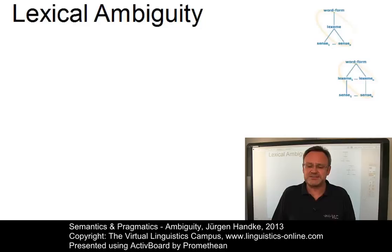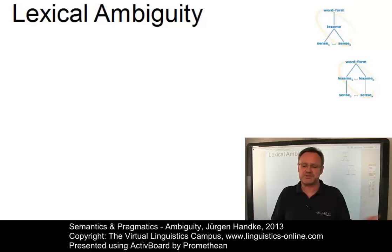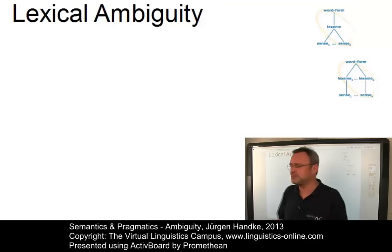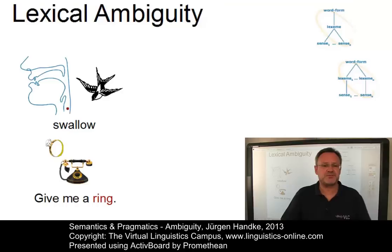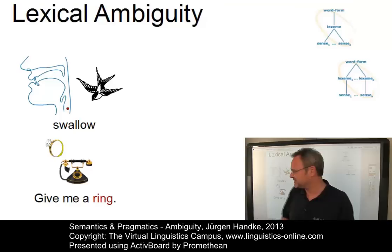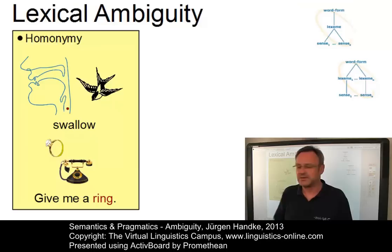Lexical ambiguity occurs at the level of the lexical items of a language, where the same phonetic or written word form represents items of different syntactic categories with different meanings, or a lexical item of a certain category has multiple senses. Traditionally, two types of lexical ambiguity are distinguished. On the one hand, we have cases where several lexemes have the same form but unrelated senses. 'Swallow' can have two interpretations: the verb and the bird. And 'give me a ring' — in one case it is a telephone ring, in the other it is a ring that you wear on your finger. Such cases are generally referred to as homonymy.